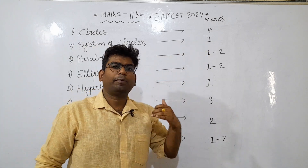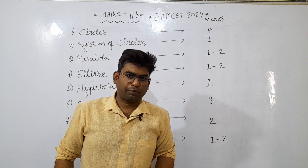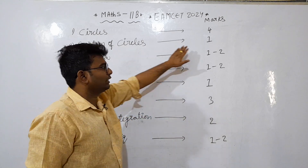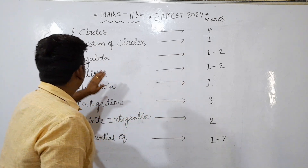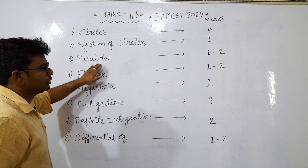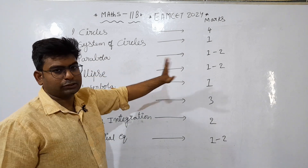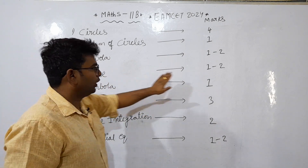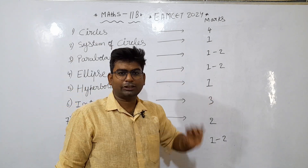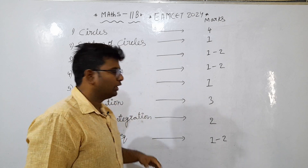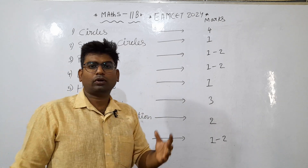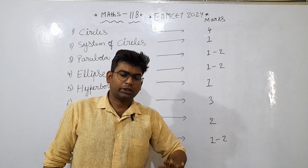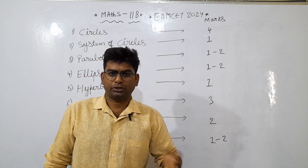So, approximately 1 question will come, but one exact question is expected. Next, from parabola, 1 to 2 questions are expected. From ellipse also, 1 to 2 questions are expected. In one shift, 2 questions may come; in another shift, 1 question will come.